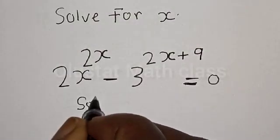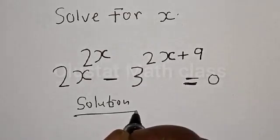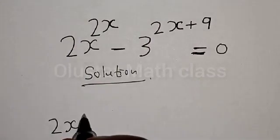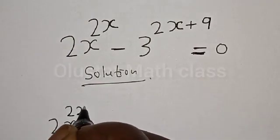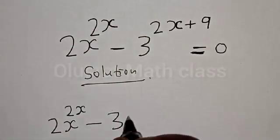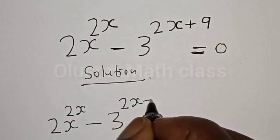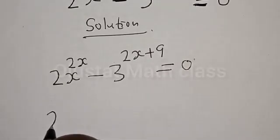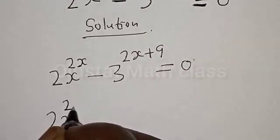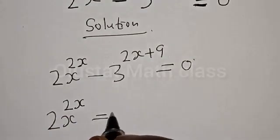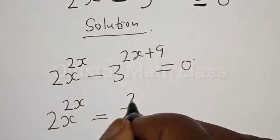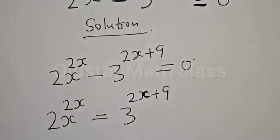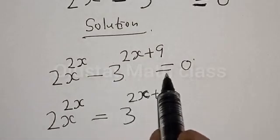Solution. We have the given equation: 2s raised to power 2s minus 3 raised to power 2s plus 9 is equal to 0. Then we rearrange: 2s raised to power 2s is equal to 3 raised to power 2s plus 9. That is, the minus 3 crosses over and becomes plus 3.